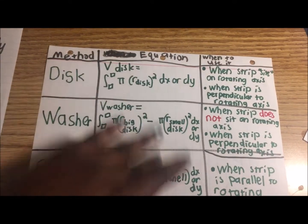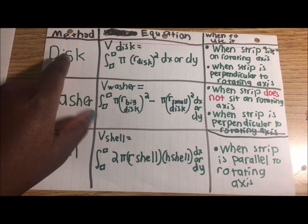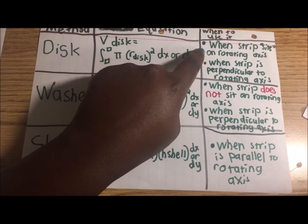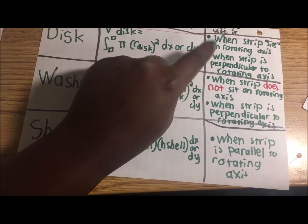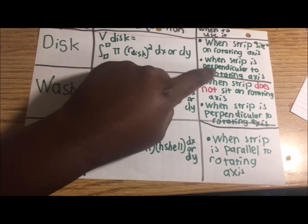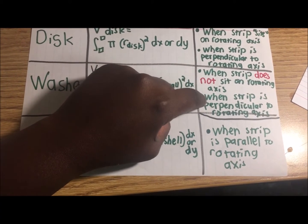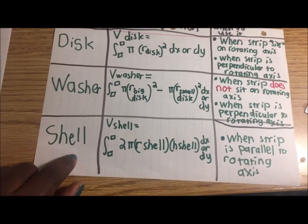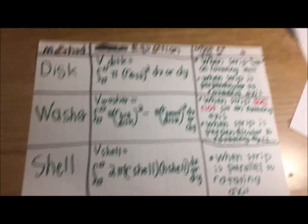These are the different characteristics each method has. I've put the method, the equation, and when to use it. For disc, use it when the strip sits on the rotating axis and when the strip is perpendicular to the rotating axis. For washer, use it when the strip does not sit on the rotating axis and when the strip is perpendicular to the rotating axis. For shell, use it when the strip is parallel to the rotating axis.